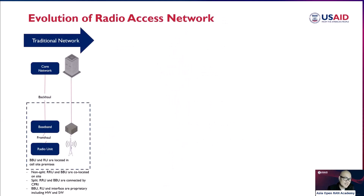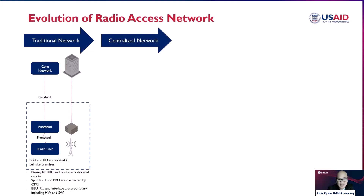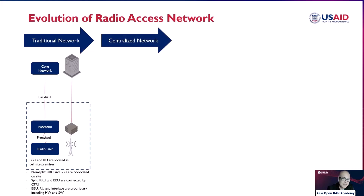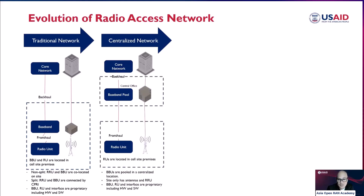From the traditional network, it evolved into a centralized network. In this architecture, which emerged in response to the need for more flexible and cost-effective solutions, a centralized processing unit supports multiple remote radio heads connected by high-speed fiber optic links. This approach helps reduce cost and improve network efficiency.